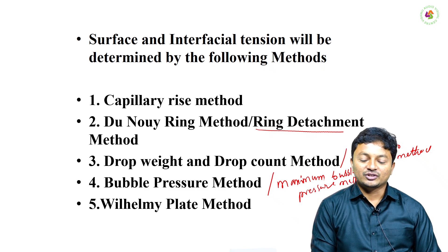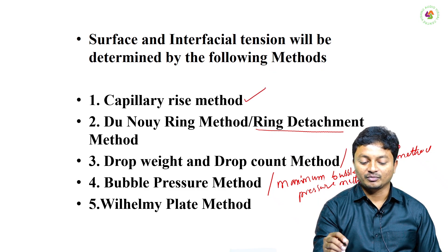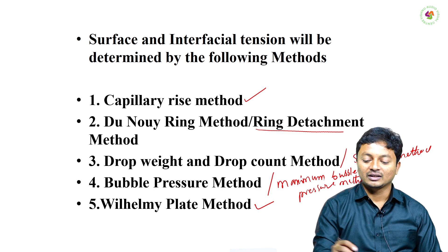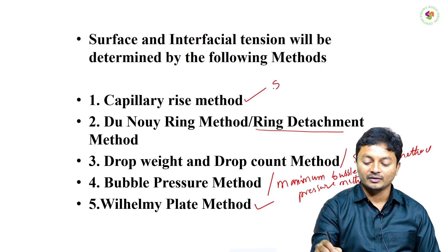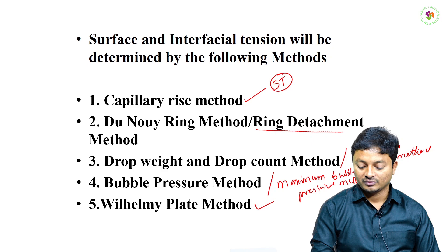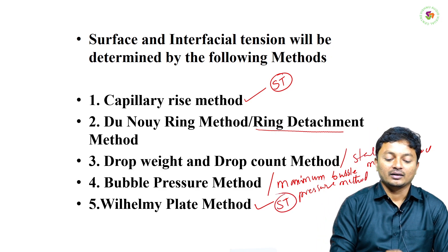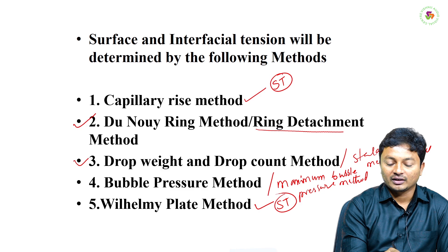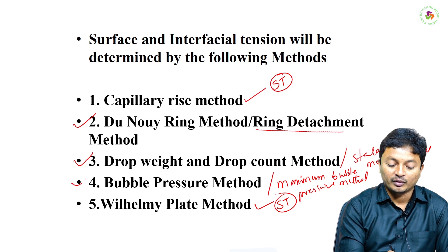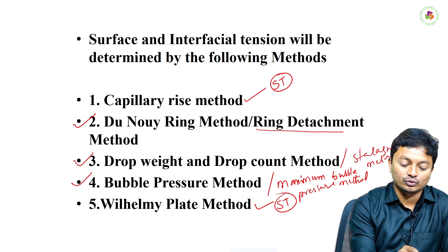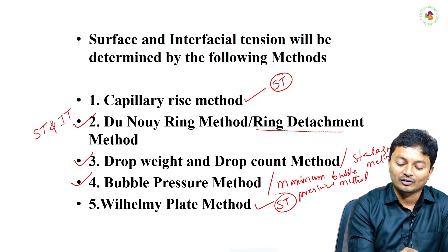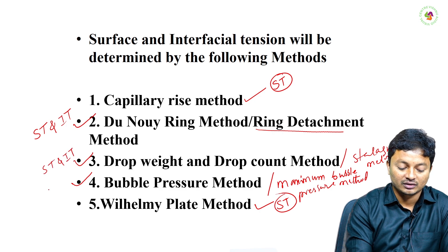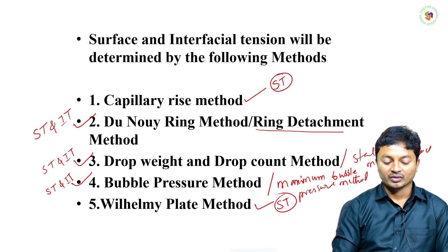Among these methods, especially the capillary rise method and Wilhelmi plate method are methods that only determine surface tension. The remaining methods — Du Noüy ring method, drop weight and drop count method, and maximum bubble pressure method — are used to determine both surface tension and interfacial tension.